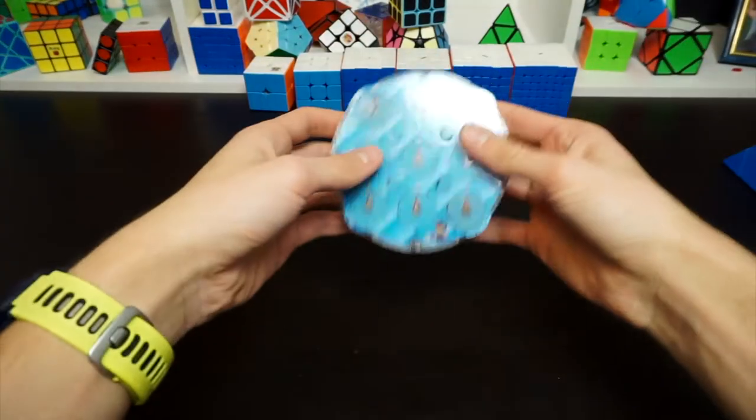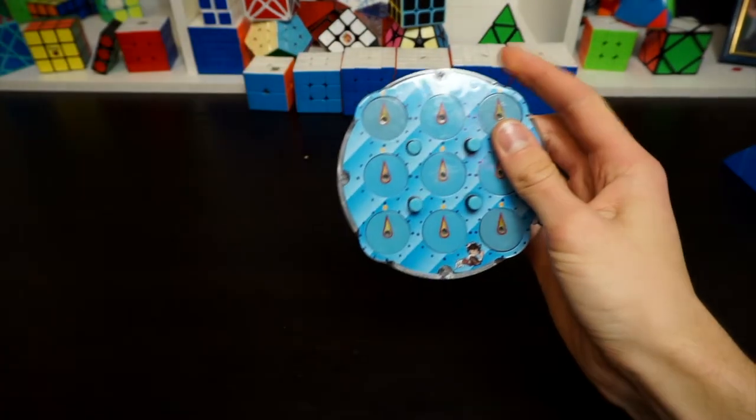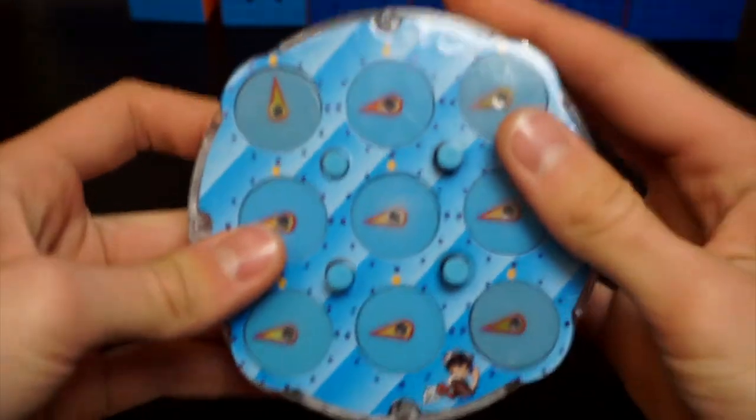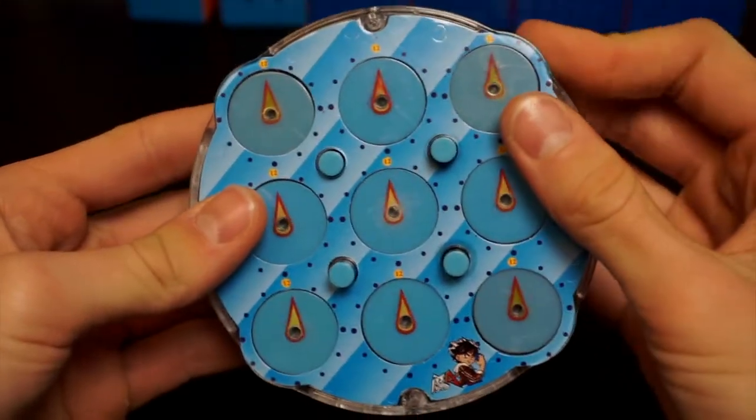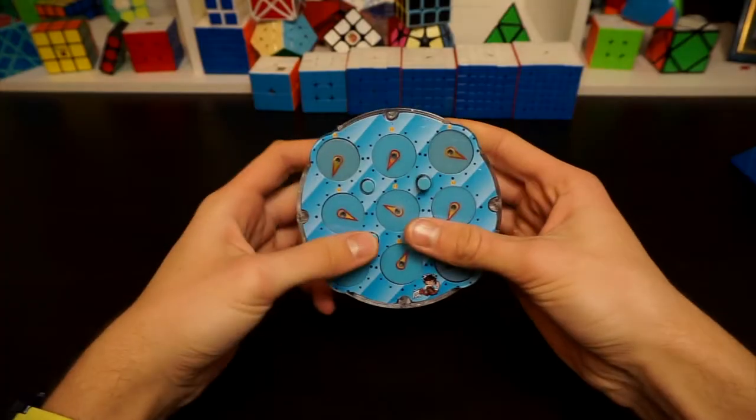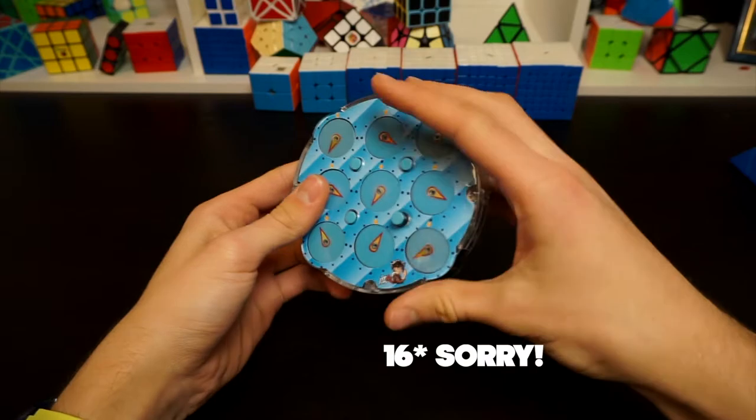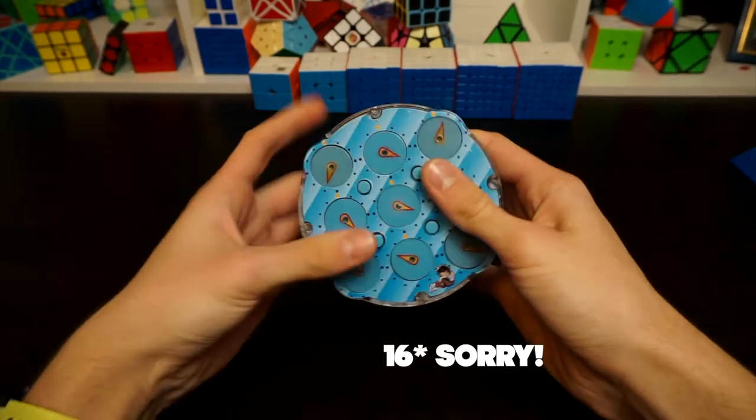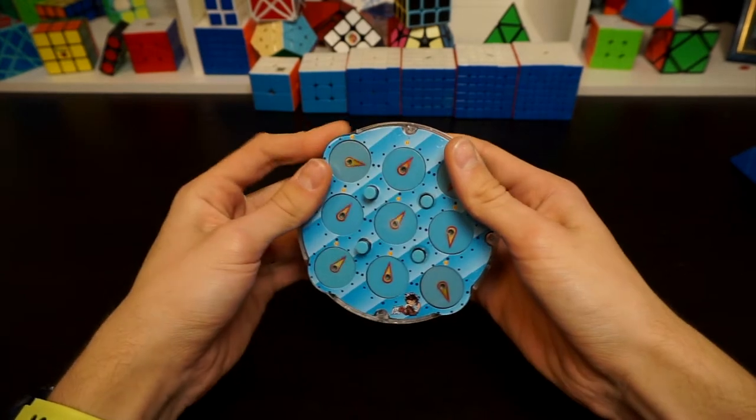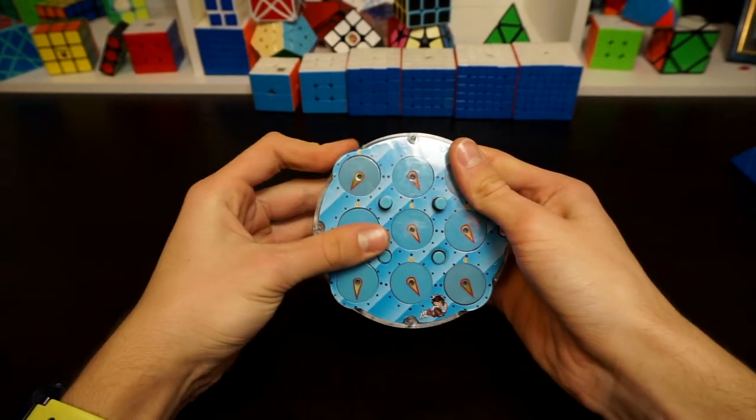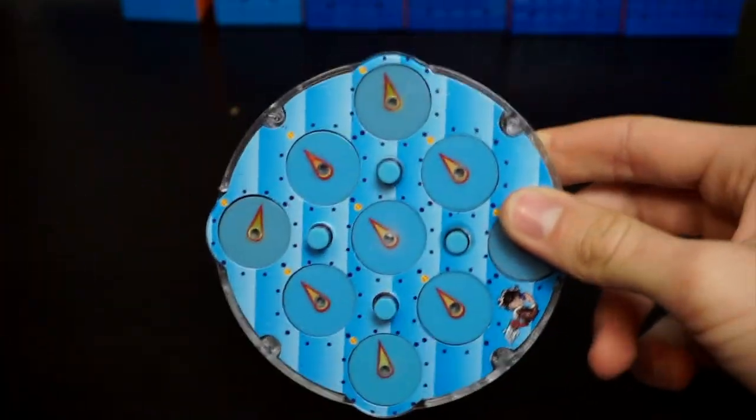So next event is the clock. And my goal is actually to get a sub 20 average. And yes I'm kidding. In reality get a sub 12 average. We'll see how that goes. But the clock is a really cool event. So for clock I'll be using the Lingao. I lubed it and it's good. It's really good.